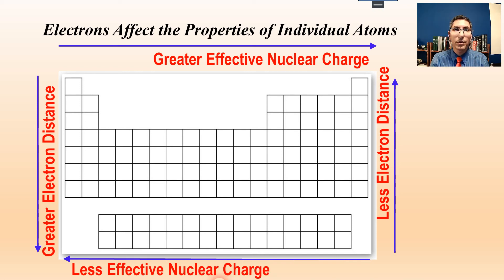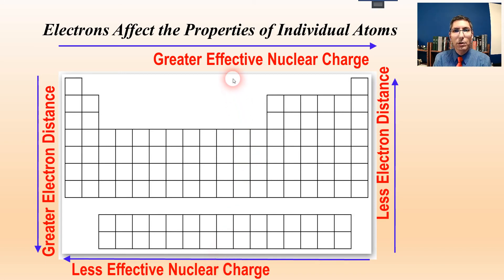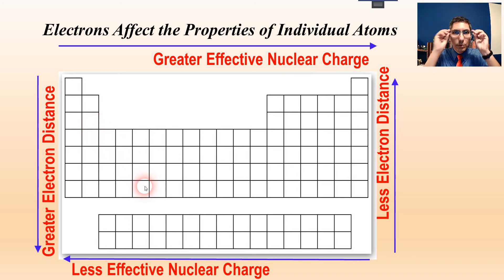Hi there, welcome back to AP Chemistry. I'm Jeremy Krug and it's time for another lesson about periodic table properties. Now if you'll recall back to lesson four, if you're a faithful watcher of this channel, then you know that you've seen this graphic before on the screen about how electrons affect the properties of individual atoms. We know that there are two main factors at play here: effective nuclear charge and electron distance, and this is the trend that we have when we're looking at those on the periodic table.